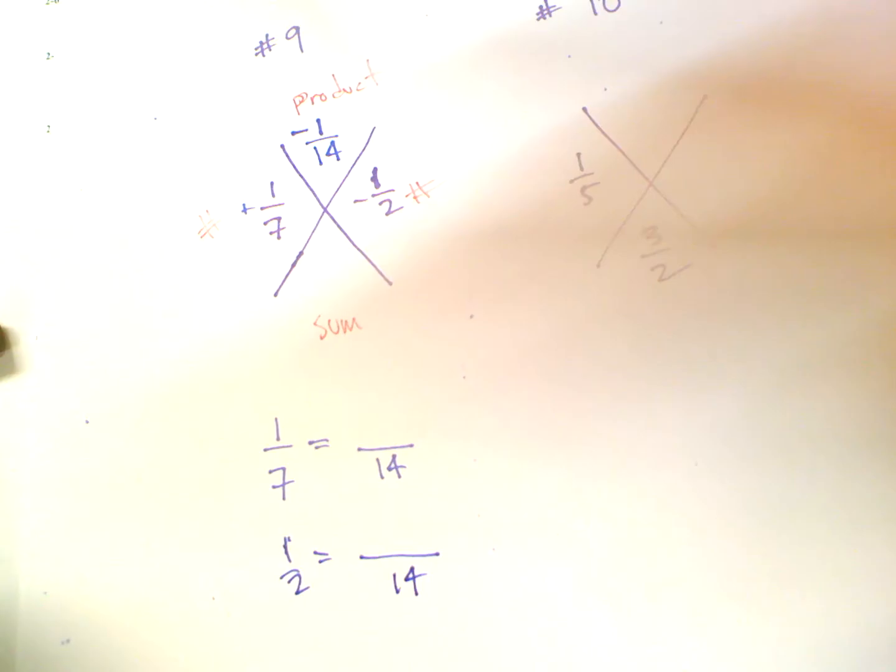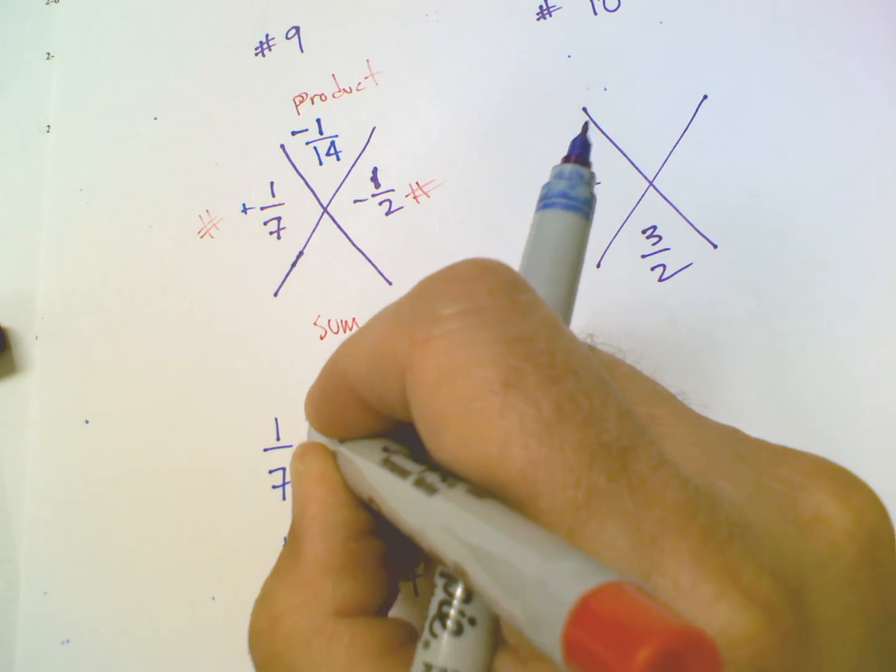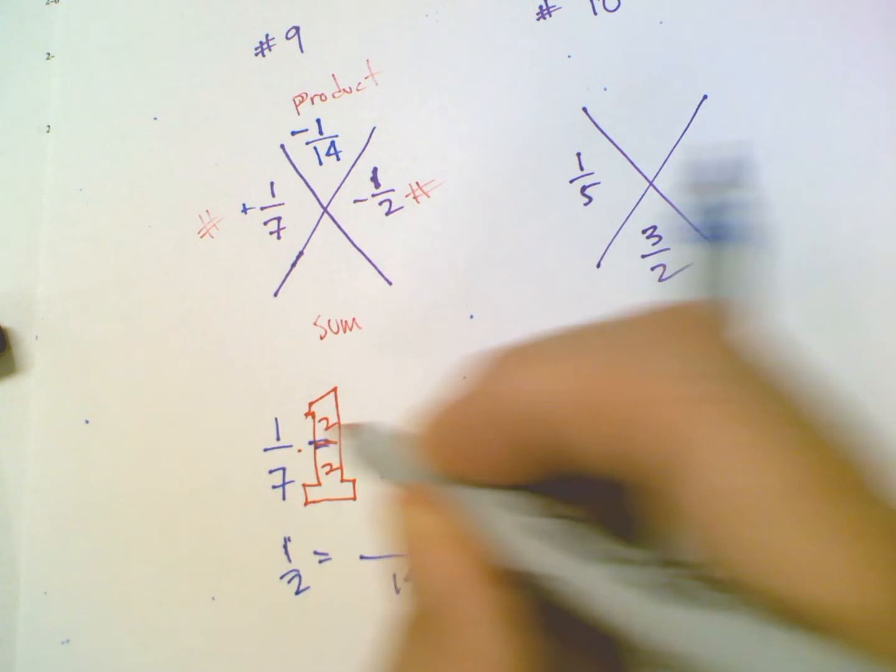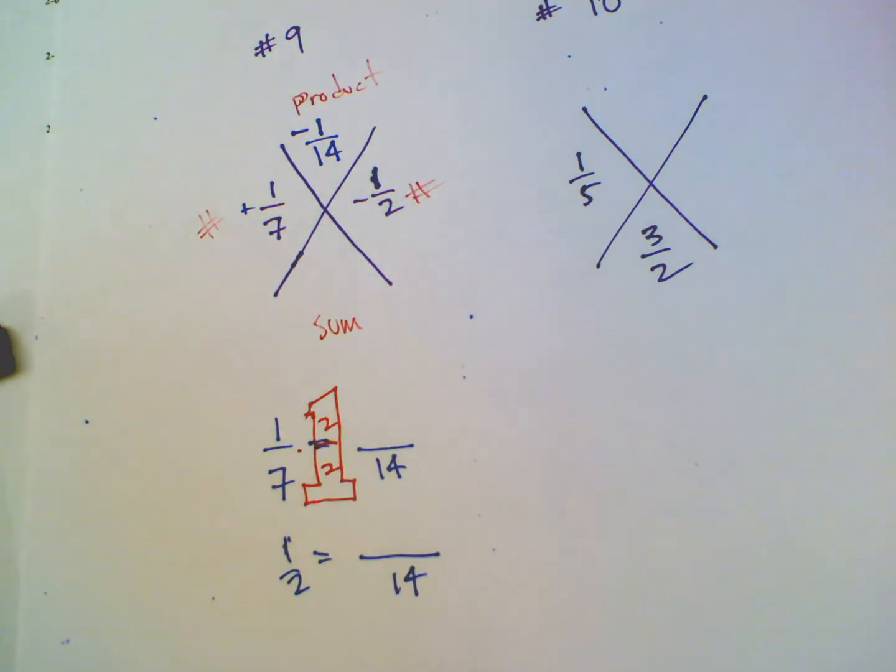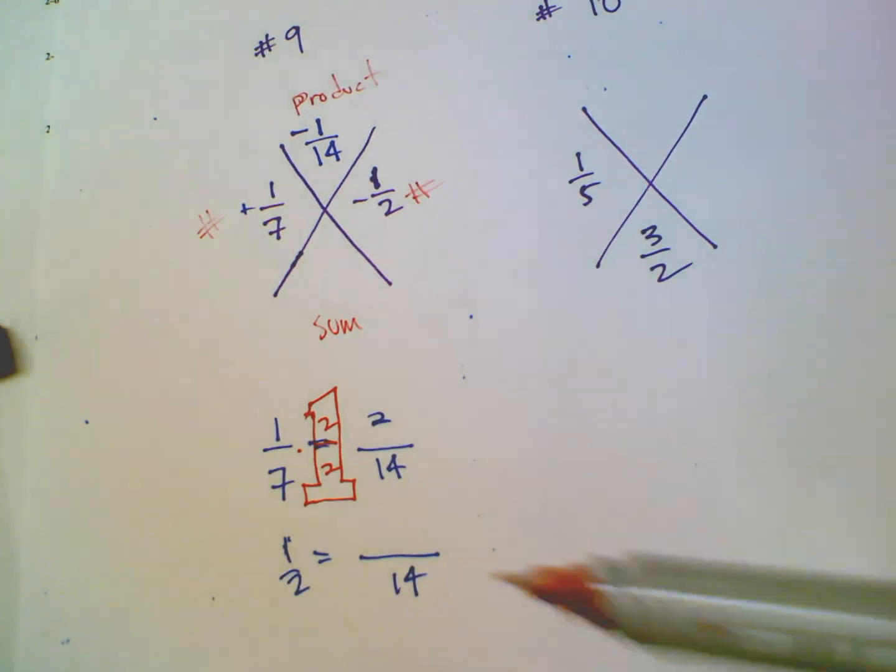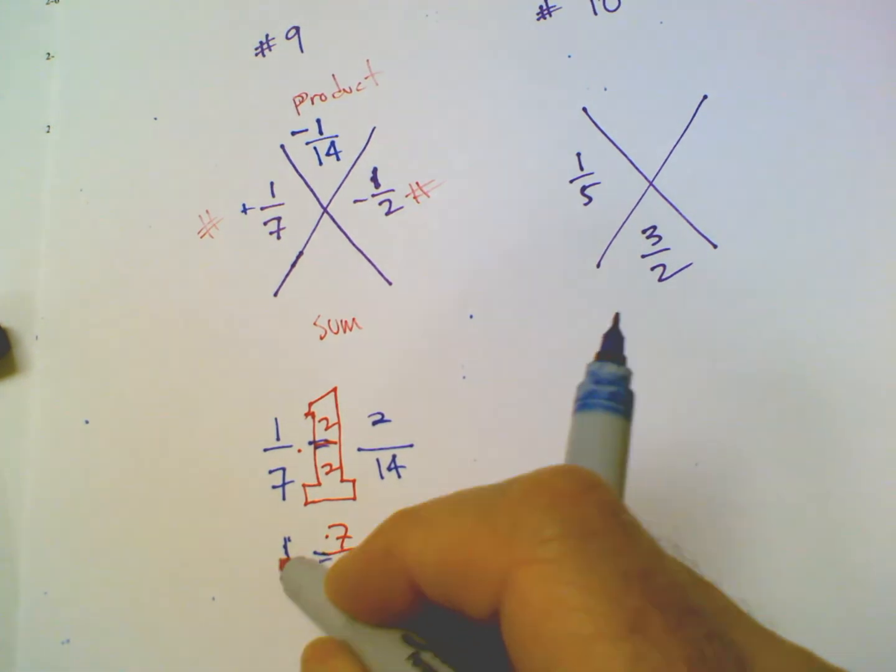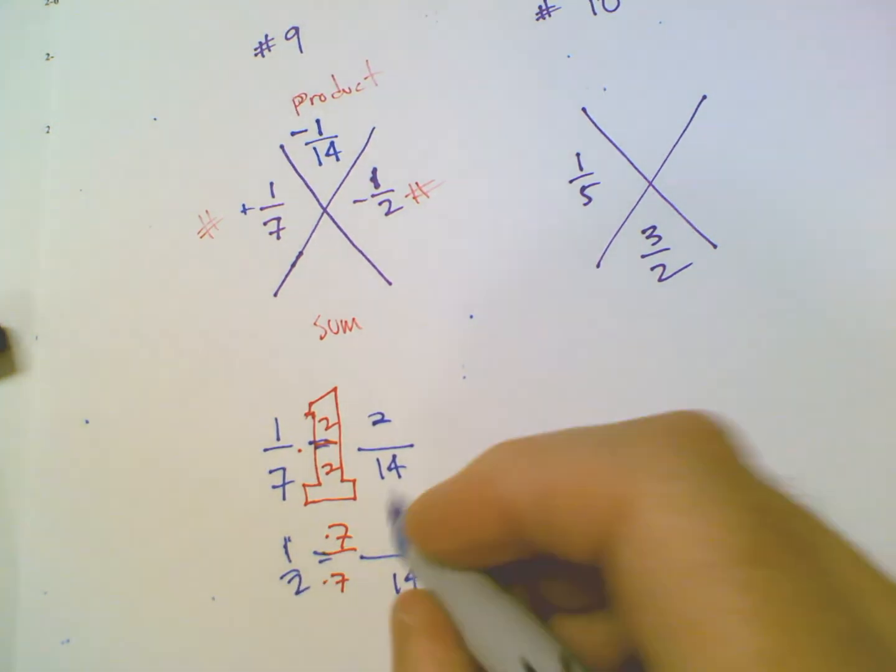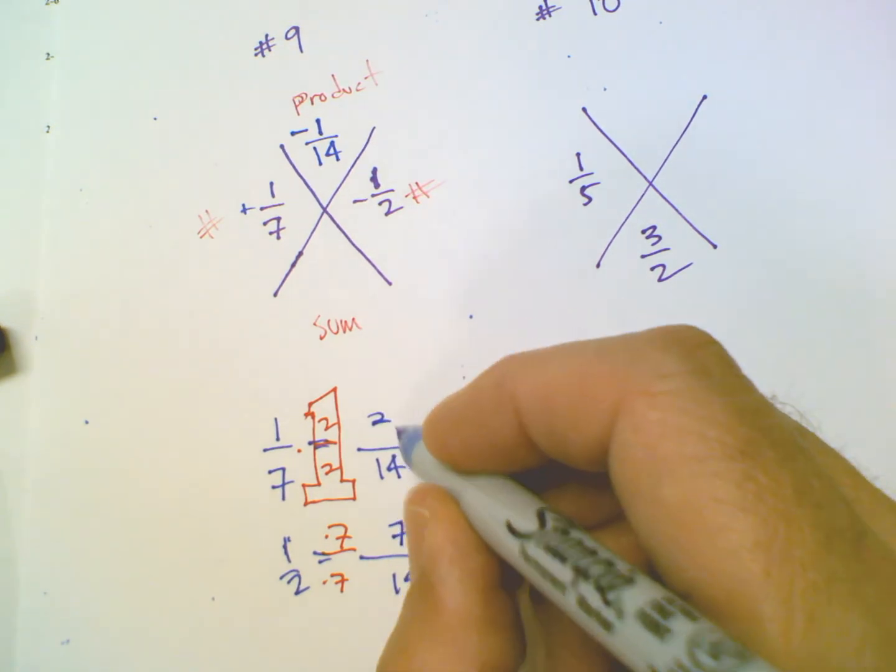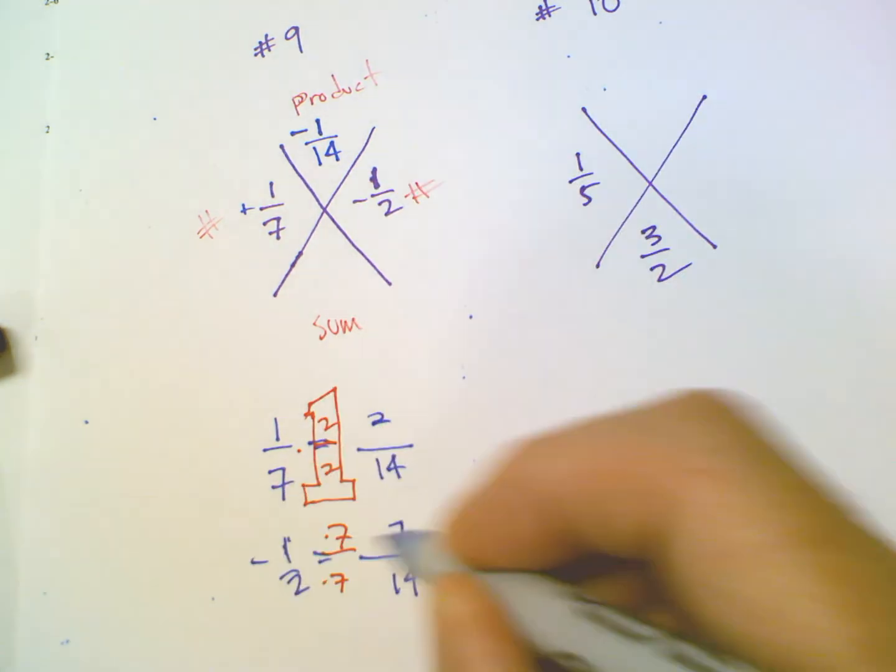How do we get there? Using the big giant 1. So the big giant 1 is multiplying top and bottom by the same thing. So what I'm going to multiply by, in this case, is 2 over 2. So 1/7 times 2 over 2 is 2/14. So then the same thing, multiply by the big giant 1 down here, which would be 7 over 7. So 7 over 7 times 1/2 gives you 7/14. So now what I have is I've got 2/14 and 7/14, except don't forget, this 7/14 actually is negative.